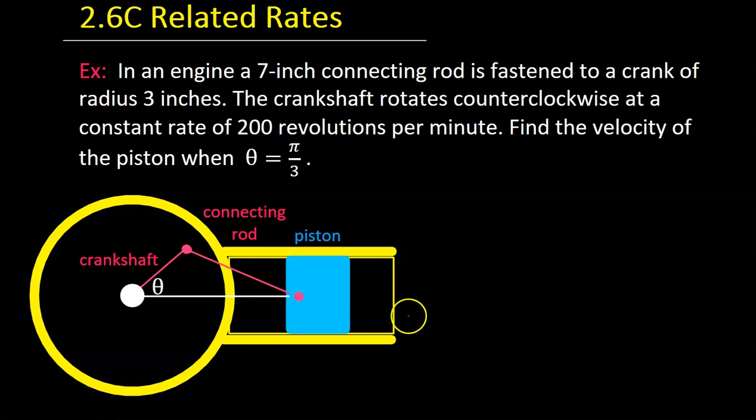In this video, we're going to do this really cool related rates problem that's going to end up involving the law of cosines. This problem is about an engine, but you don't really need to know anything about how engines work, except understand that this radius piece, called a crankshaft, is going to be rotating counterclockwise, and as it's rotating, it's going to be pushing and pulling this piston in and out.